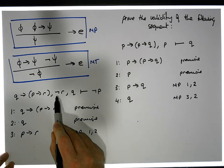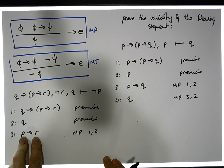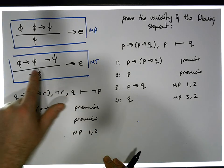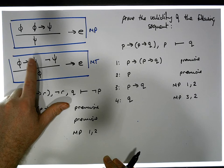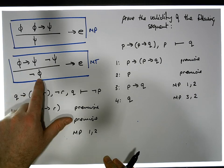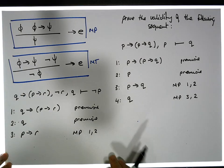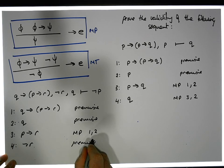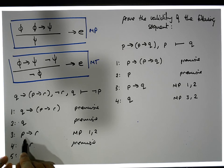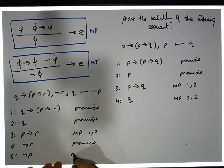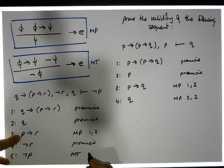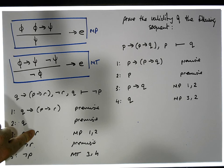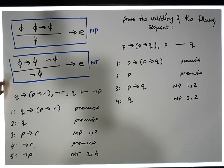Now we have the implication p implies r is true, and we know the negation of r is true from the premises. That means we have an implication that's true and the negation of its consequent is true. So modus tollens kicks in. Step four: the negation of r is true — a premise. Step five: by modus tollens applied to steps three and four, the negation of p must be true — which is exactly what modus tollens tells us.